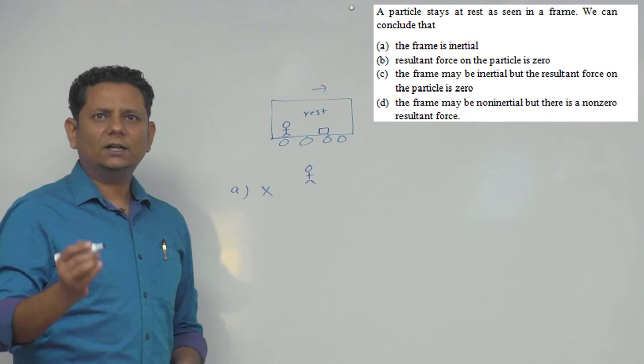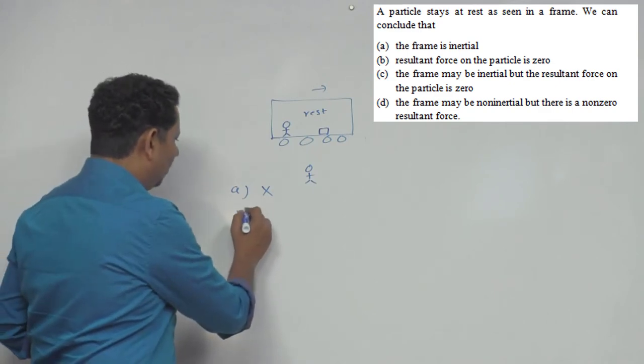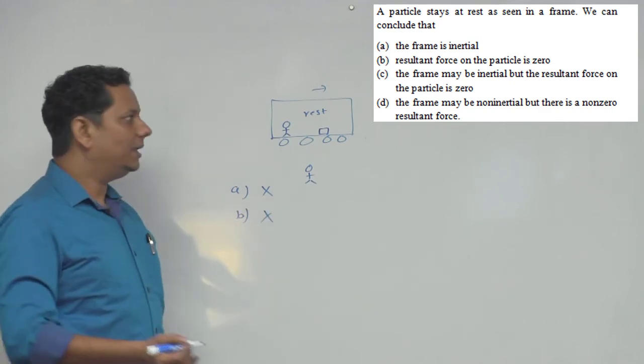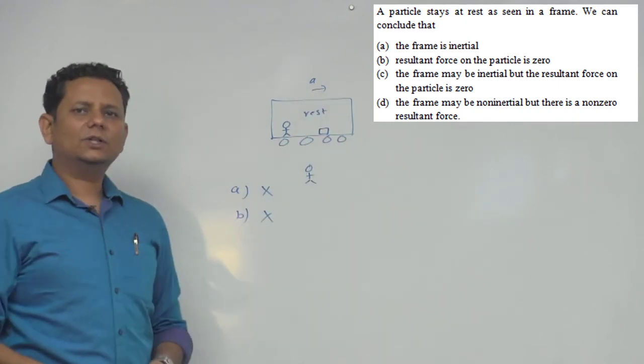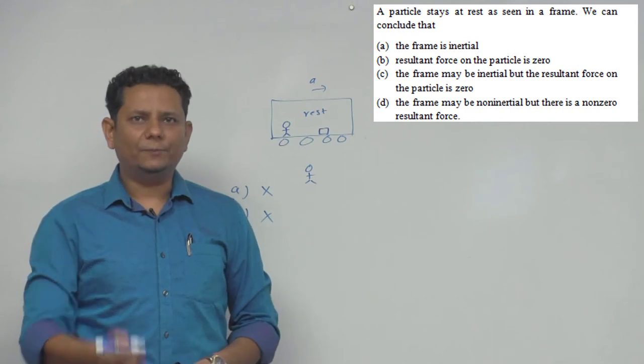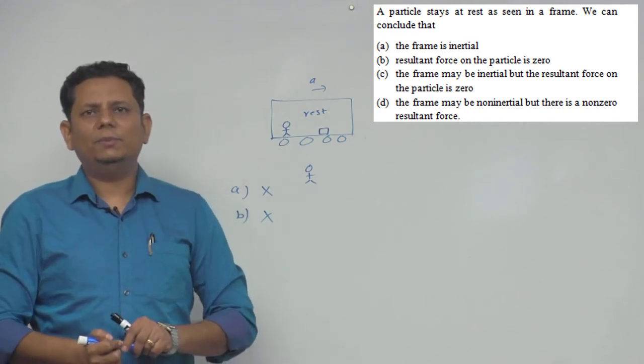Option B says the resultant force on the particle is zero. Now if we see this, it's also not necessary, because in this frame forces are acting on it as it's moving forward. So it's not necessary that option B is always true.